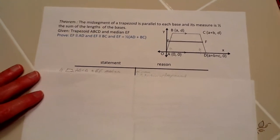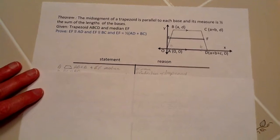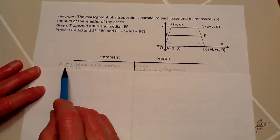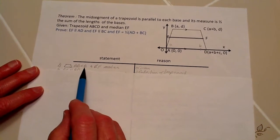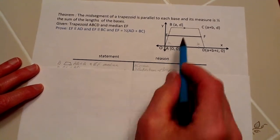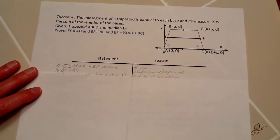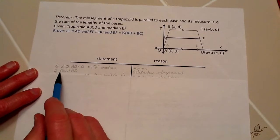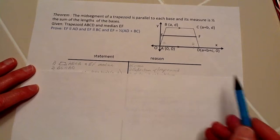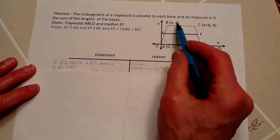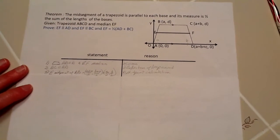Let's go about proving this. First we have the trapezoid ABCD and the median EF, which is a restatement of what was given. We also know that BC is parallel to AD because that's part of the definition of a trapezoid.